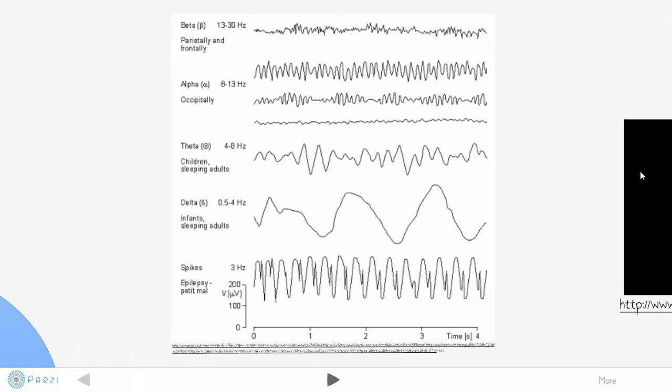Resulting waves can be divided into four categories. Alpha waves, which appear usually occipitally in normal relaxed adults. Beta waves, that appear frontally and parietally indicating alert adults. Theta waves, which represent children and sleeping adults. And delta waves, which appear in infants and deep sleeping adults.